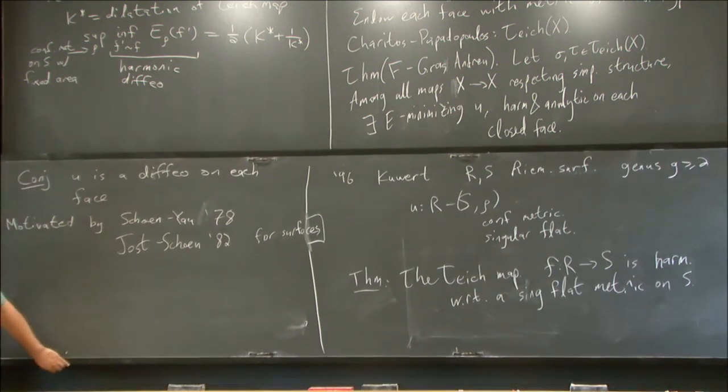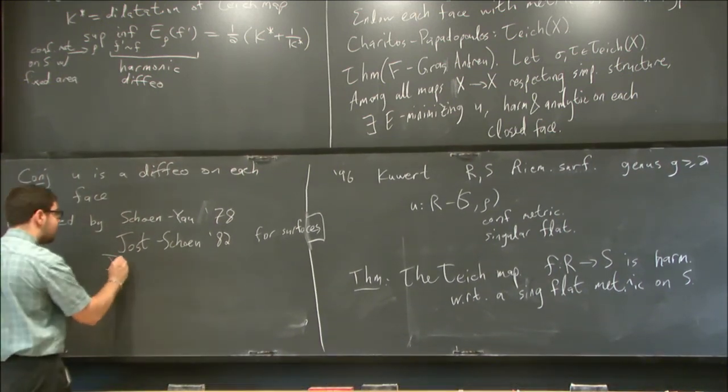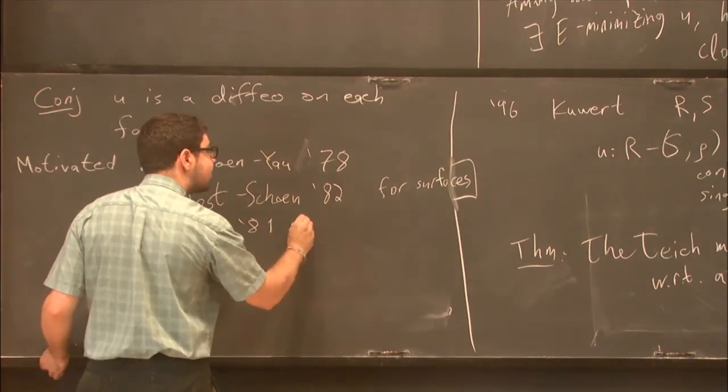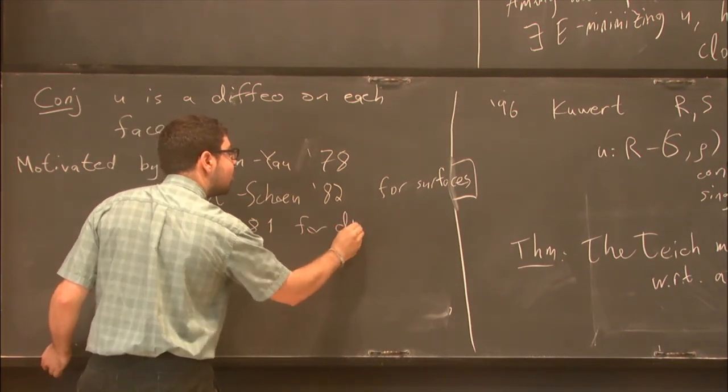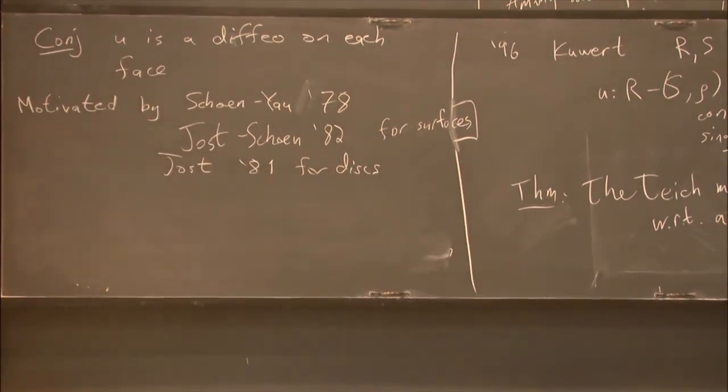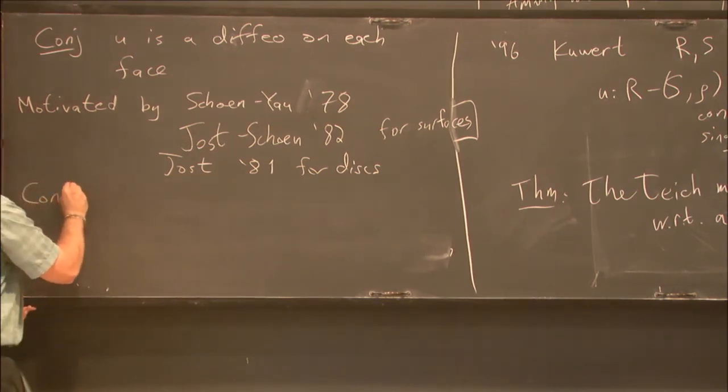And the Yoast-Shane method relies on Yoast from 81 for disks. Who says that if you have a homeomorphism on the circle into a manifold, then the harmonic map that fills it in on the disk is a diffeomorphism. And that leads to the conjecture, the local version of the conjecture, which says that,